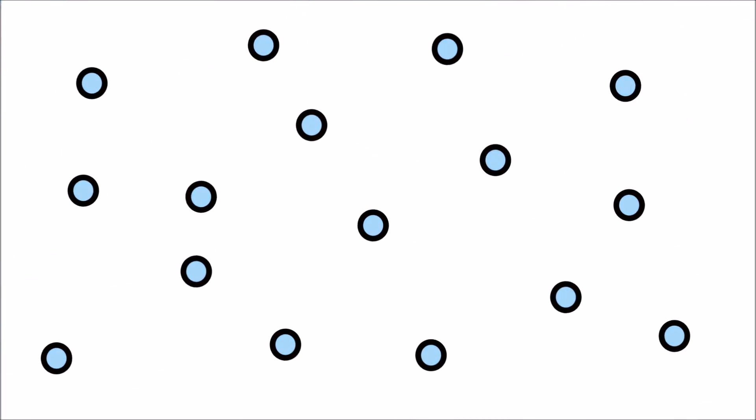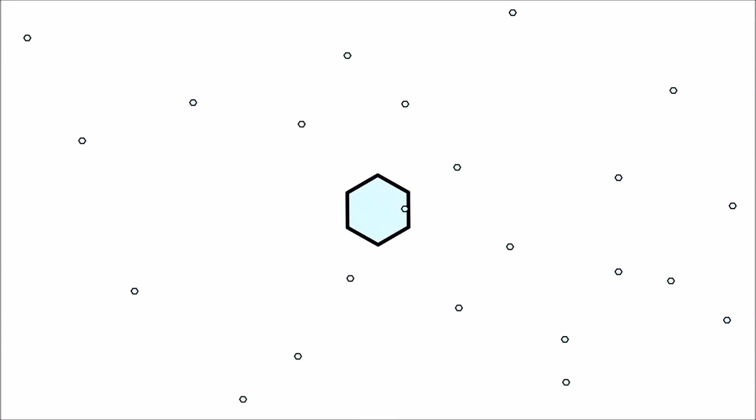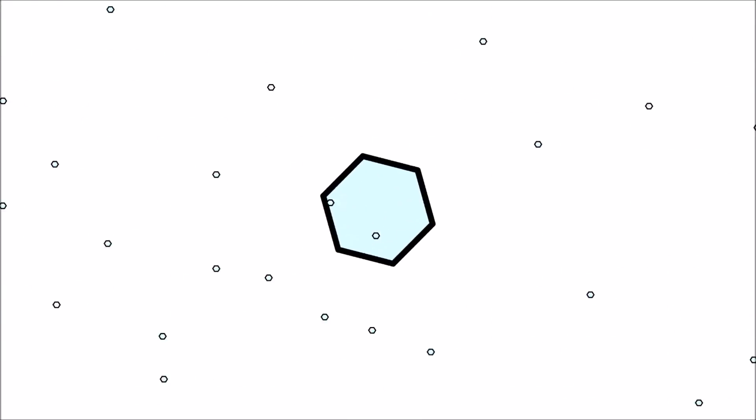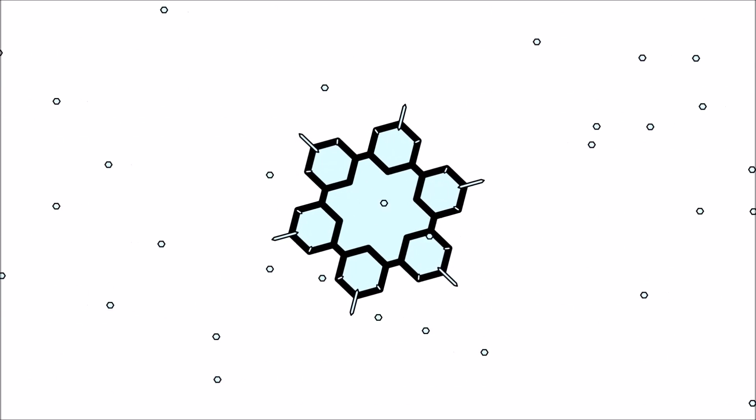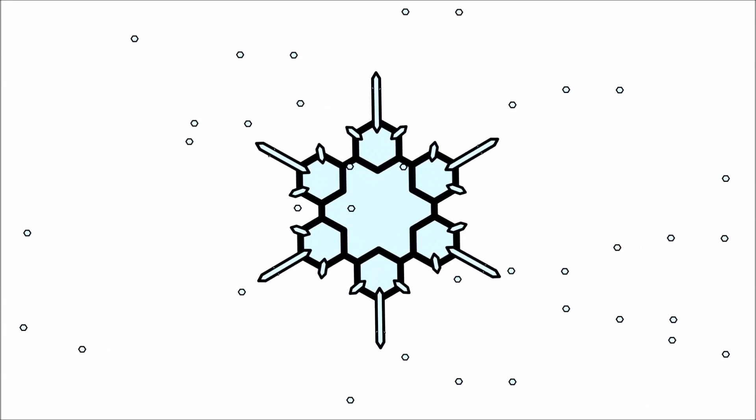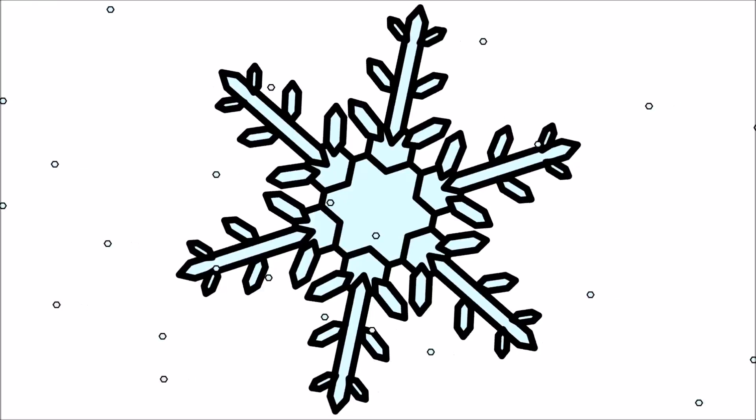When water vapor in the atmosphere freezes, it turns into ice crystals. These tiny ice crystals stick together and grow into a snowflake. Each snowflake has a unique shape that depends on the atmosphere's temperature and water vapor content.